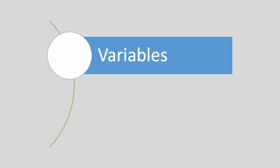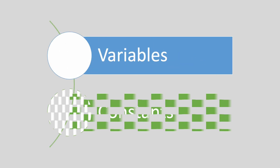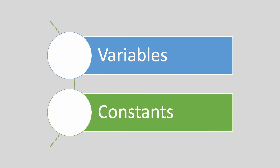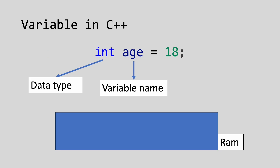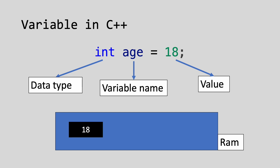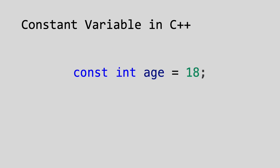Explore the world of variables and constants. In C++, variables serve as symbolic names for memory locations, representing the fundamental units of storage within a program. Constants are unmodifiable variables declared with fixed values.